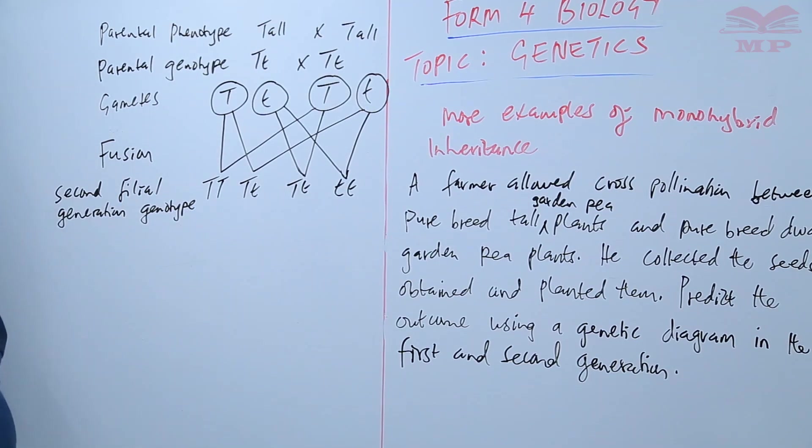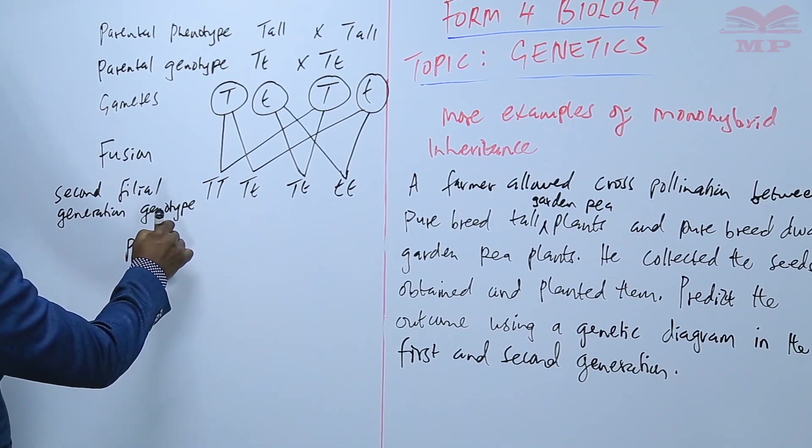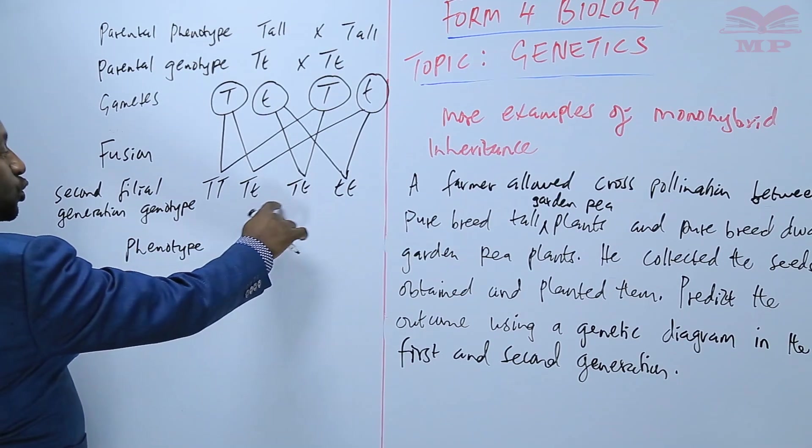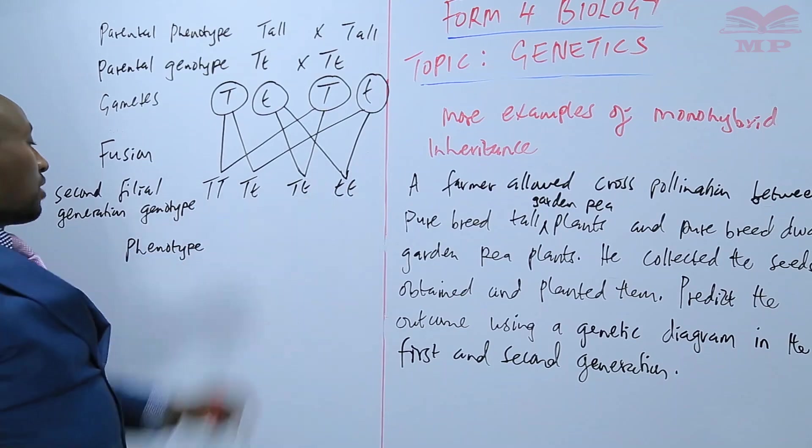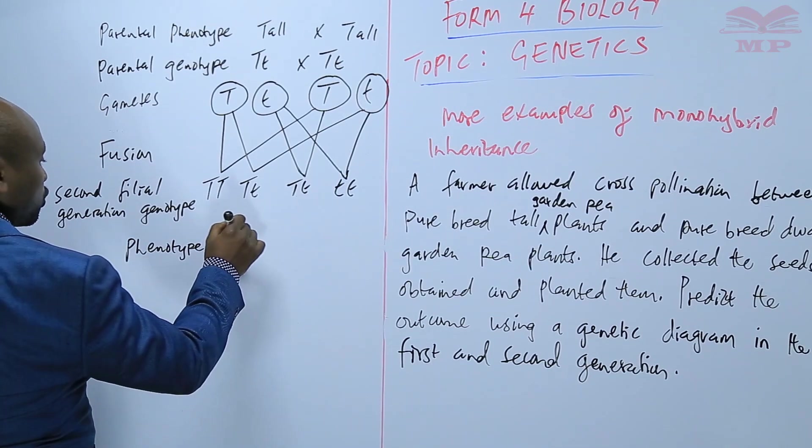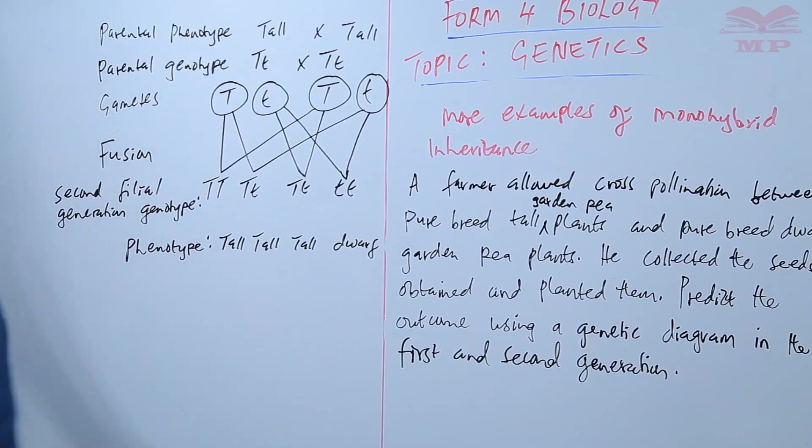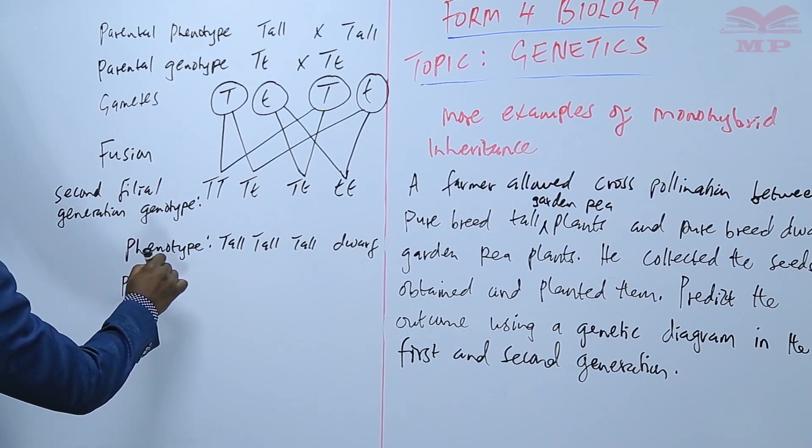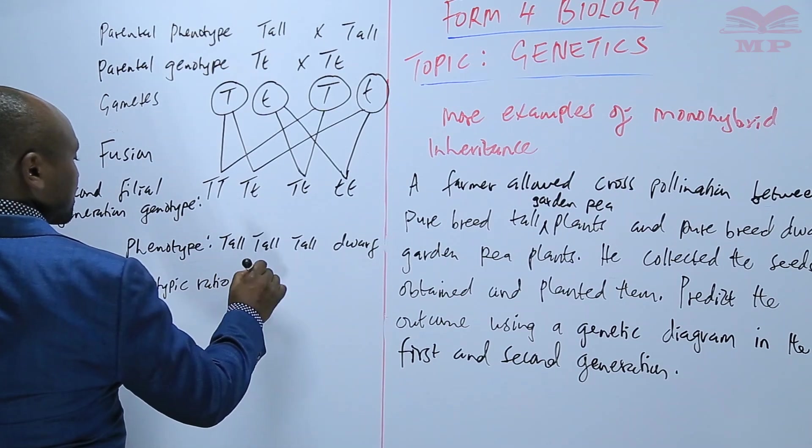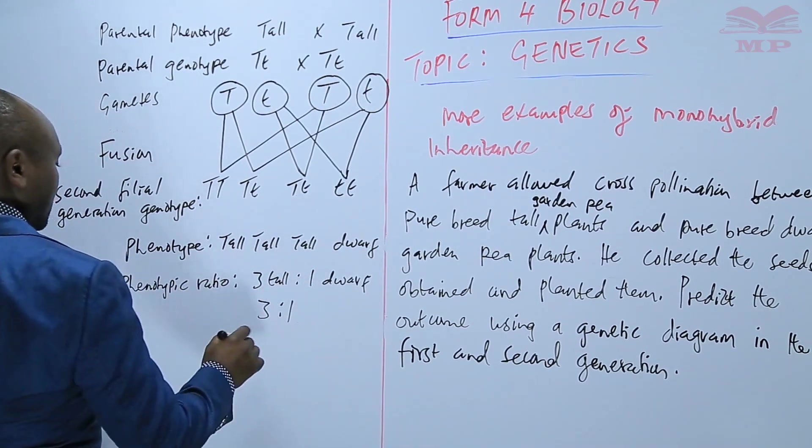This is the second filial generation genotype. The genotype should always be in letters but the phenotype should be in the respective traits: tall, short, etc. The phenotype: these and these and these are tall because wherever there is a capital that shows the dominant trait. But this one is a dwarf. So we have tall, tall, tall, and a dwarf.